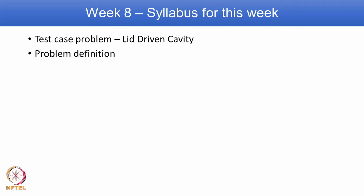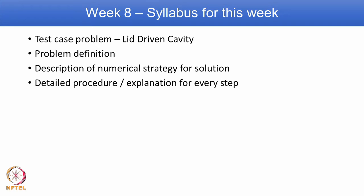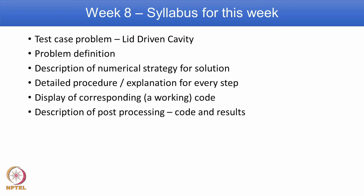We will first define the problem, then explain different numerical strategies to approach CFD and get a solution. We will do a detailed procedure and explanation of every step and display the corresponding code. Once we get the solution, we are interested to see the results in different forms — that stage of CFD is known as post processing. In addition to primary variables, we also look at derivatives of primary variables and show the results.